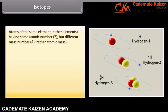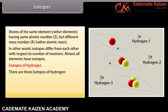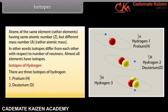Atoms of the same element having the same atomic number Z but different mass number A (atomic mass) are called isotopes. Isotopes differ from each other with respect to number of neutrons. Almost all elements have isotopes. Isotopes of hydrogen: there are three isotopes of hydrogen — 1. Protium, 2. Deuterium, 3. Tritium.